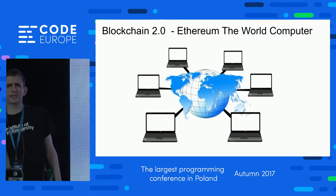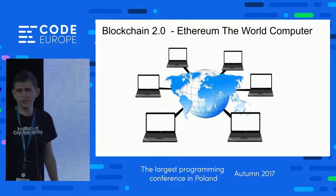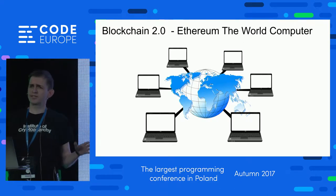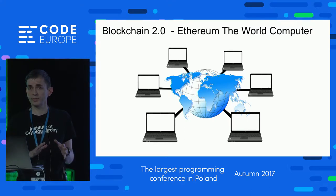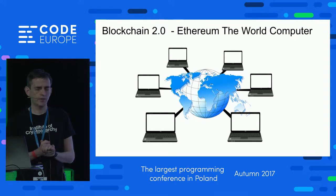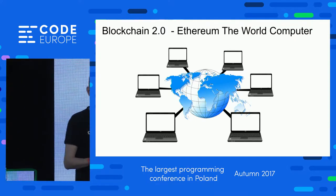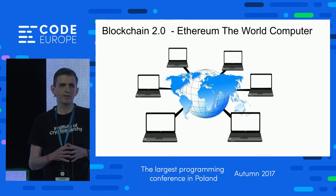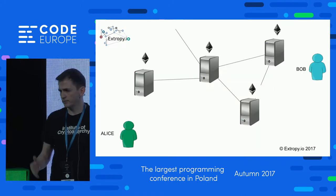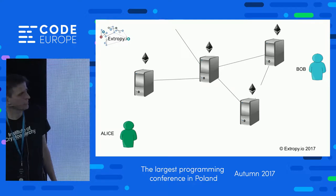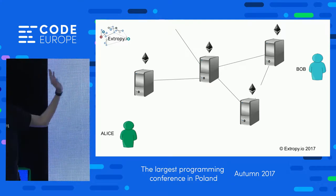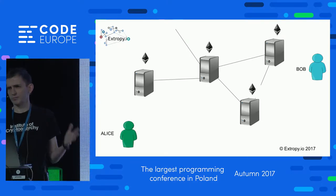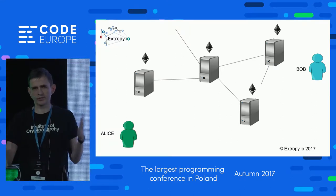The next major milestone came in 2014 with Ethereum, which has been described as the world computer. The idea behind Ethereum is that it is a general computing platform built on the blockchain — you can build applications that will run on the blockchain. These applications are not restricted in the same way that Bitcoin scripts are; the applications written on Ethereum use a Turing complete language and are essentially arbitrary pieces of code that can do pretty much anything.